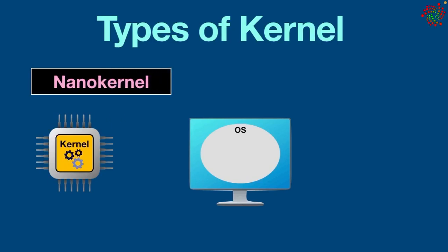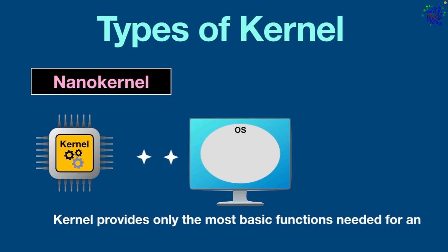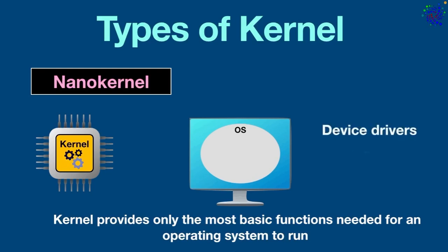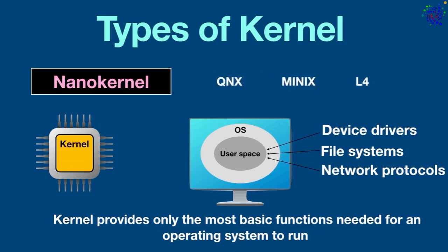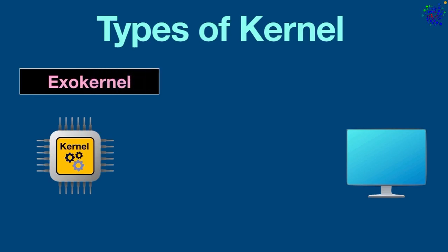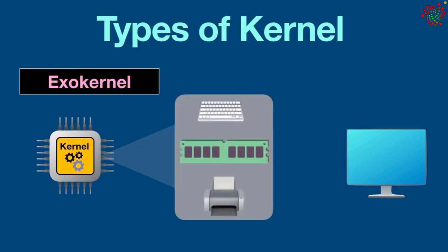Nano kernel: this type is a minimalistic operating system architecture where the kernel provides only the most basic functions needed for an operating system to run. All other functions such as device drivers, file systems, and network protocols are implemented as user-level processes. Examples are QNX, MINIX, and L4.